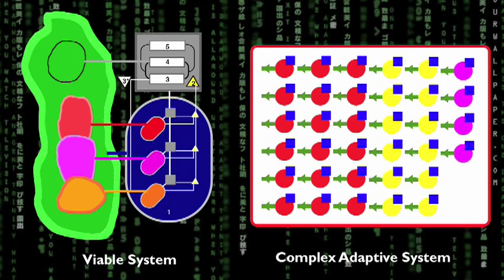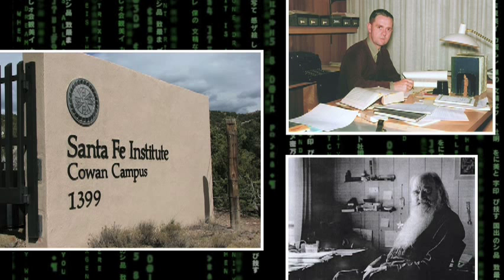To talk about systems that survive without being more specific can be confusing. To the left is a viable system having a well-defined structure. To the right is a complex adaptive system. Complex adaptive systems have been studied mainly by the Santa Fe Institute using high-speed computers and sophisticated software in an era called artificial life that began in Los Alamos during the development of the atomic bomb. Viable systems come from the biological studies of British cybernetician Ross Ashby and Stafford Beer's application of cybernetic laws and principles.